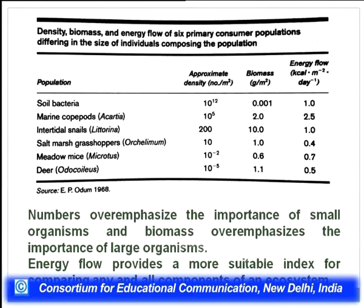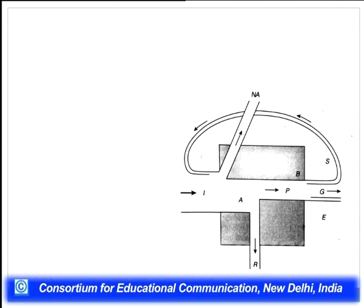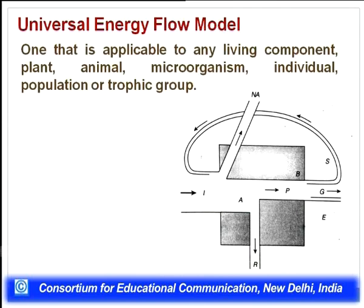Since we have been talking about ecosystem energetics — the behavior of energy, its representation through productivity and biomass — we now need to understand how energy flows through the ecosystem. There is a universal model of energy flow that governs how energy passes through a trophic level or from one trophic level to another. This model is applicable to any living component: plant, animal, microorganism, individual, population, or trophic group — that is why it is called a universal energy flow model.